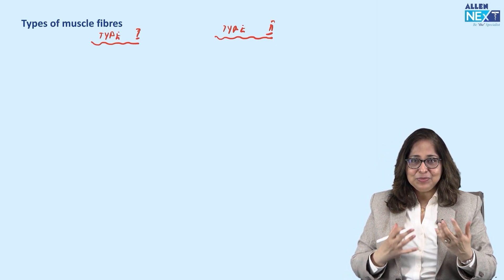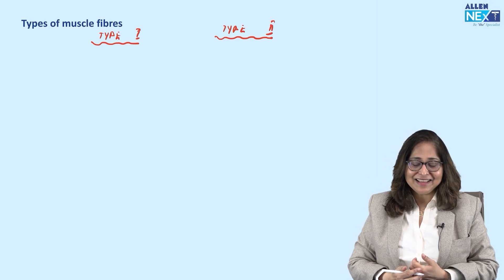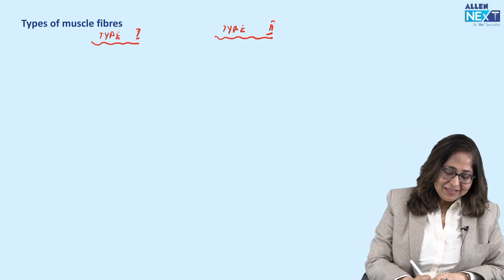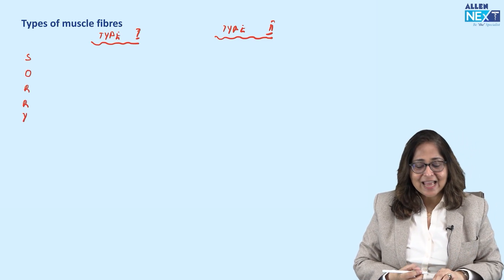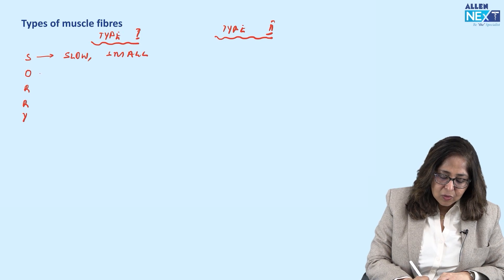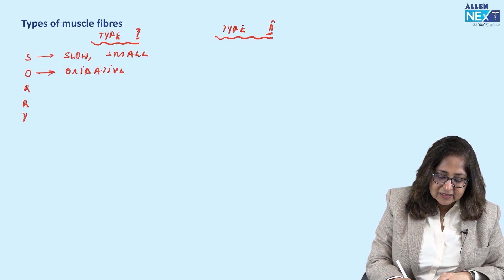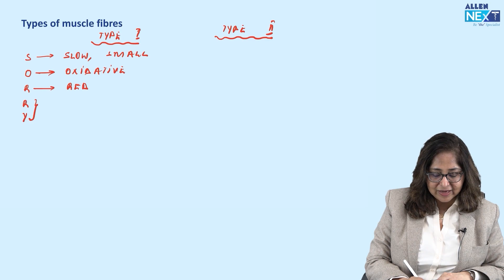Someone who is thin and weak, you feel sorry for them. So just to remember, this is a very sorry-looking fiber. The mnemonic for type 1: S is slow, S is small, O is oxidative, and R stands for red. So type 1 is slow, small, oxidative, and red.